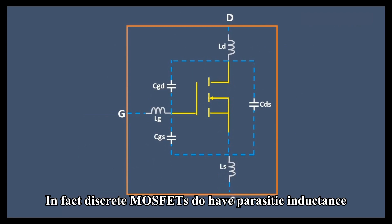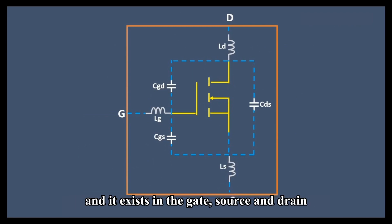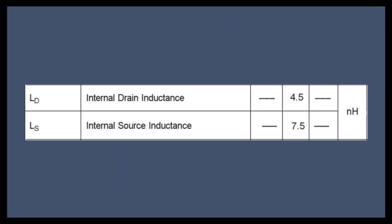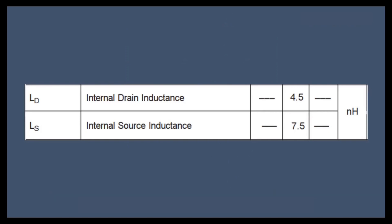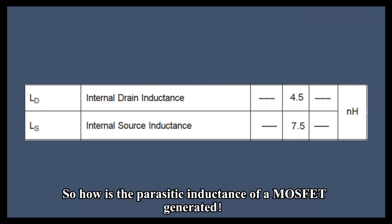In fact, discrete MOSFETs do have parasitic inductance and it exists in the gate, source, and drain. Some MOSFET datasheets will mention this parasitic inductance. So how is the parasitic inductance of a MOSFET generated?